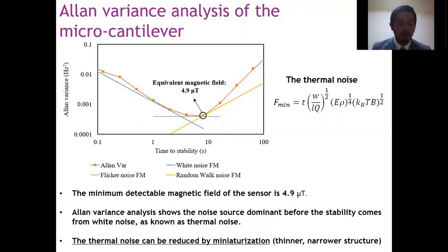The thermal noise can be reduced by miniaturization by making the structure thinner and narrower. Another consideration is to utilize another material with high quality factor. If we can find material which have higher quality factor such as aluminum nitride to change the PZT, lower noise also can be achieved.